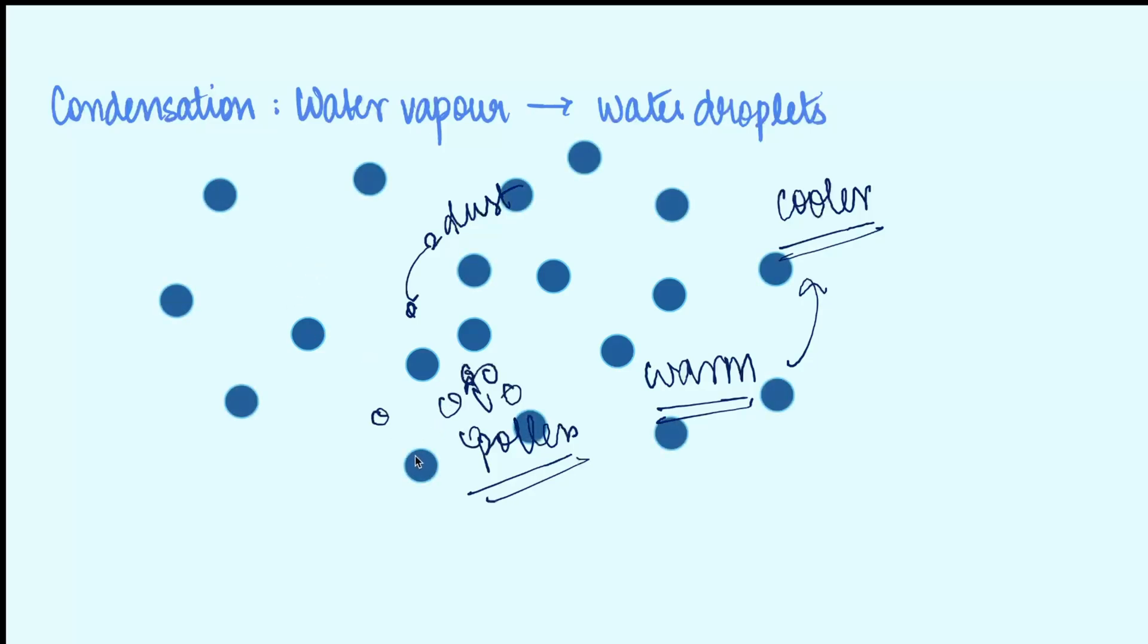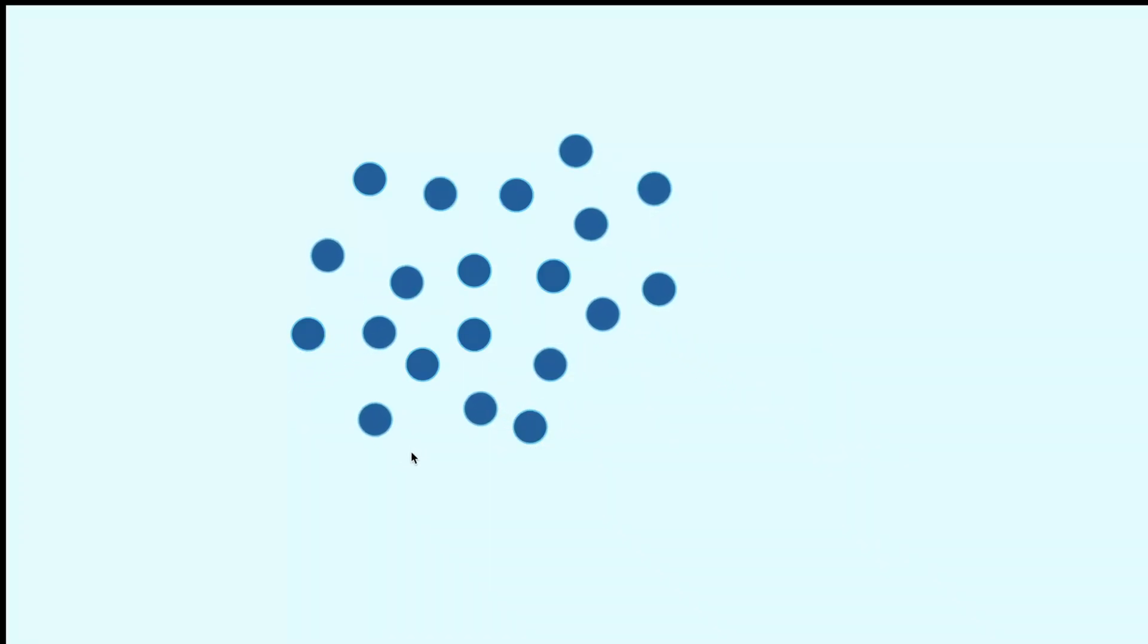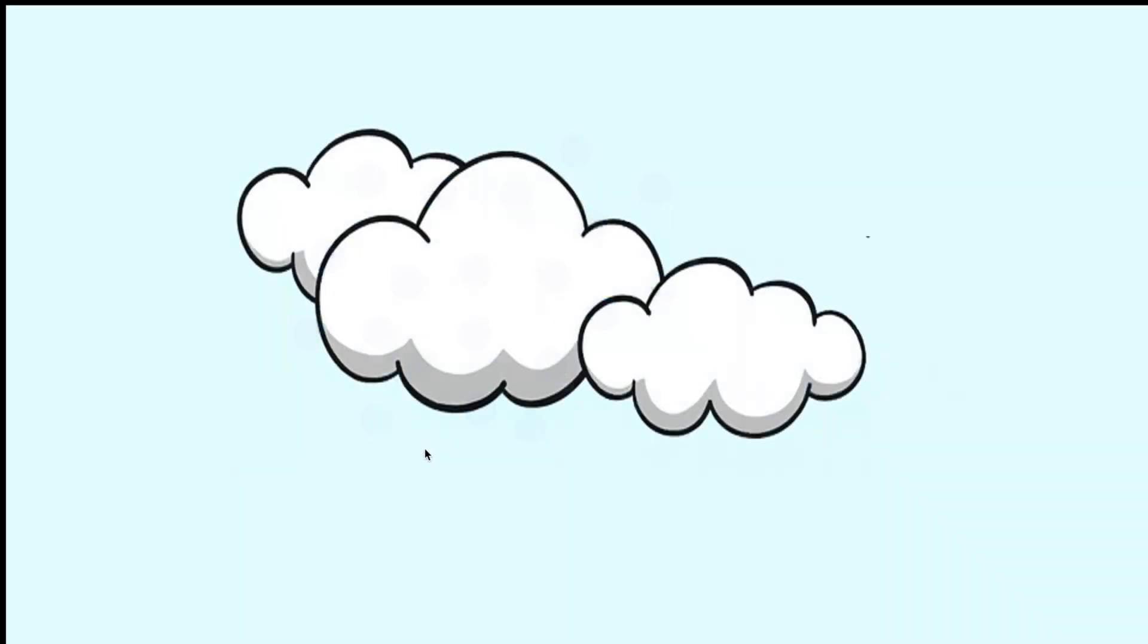Therefore, these small droplets cluster together and eventually they create clouds. So as more and more droplets gather together, a cloud grows bigger and they grow denser. So eventually, clouds are formed when droplets of water gather together.